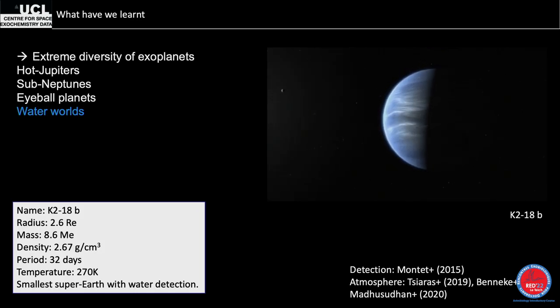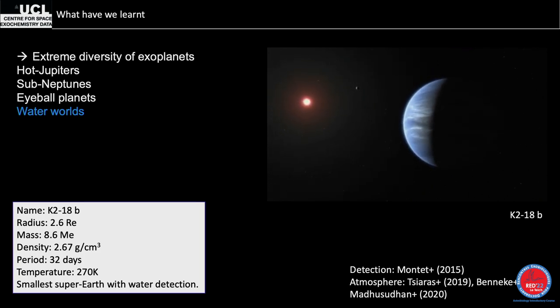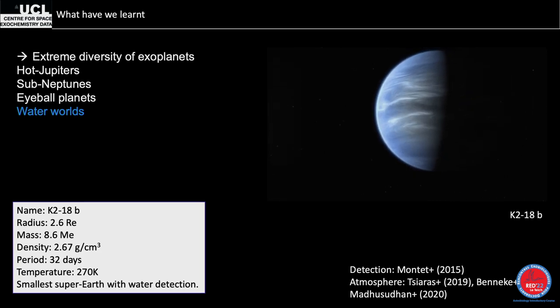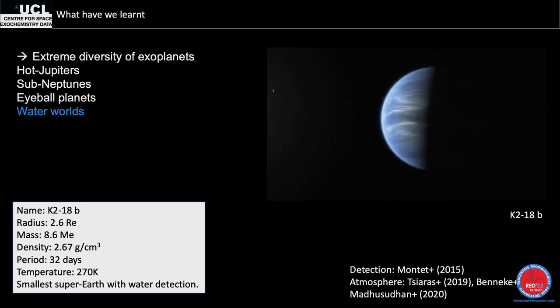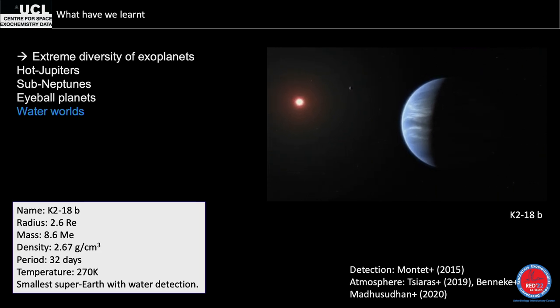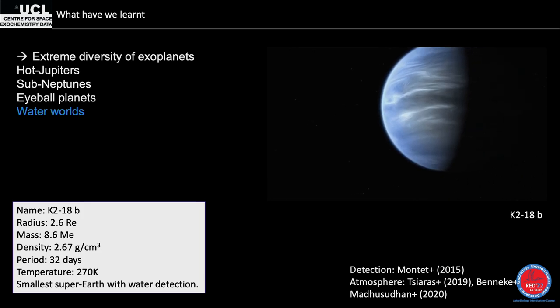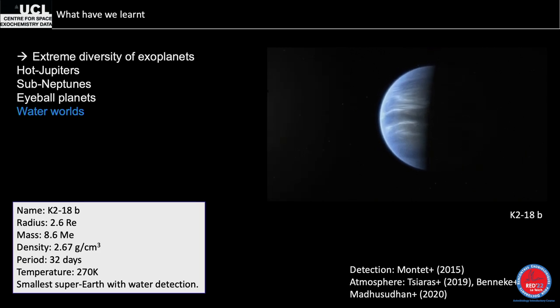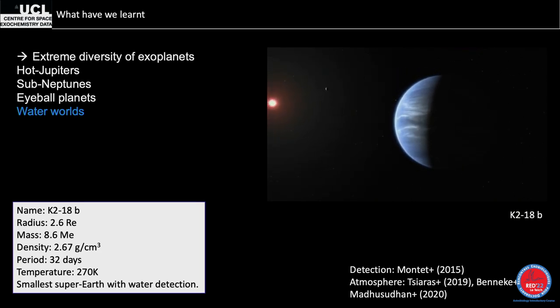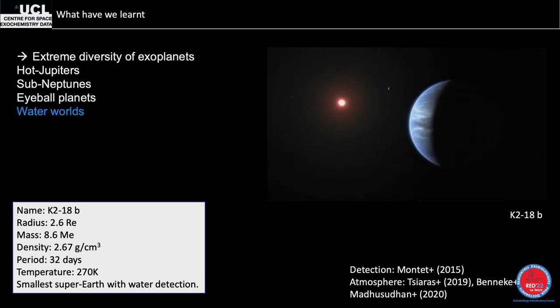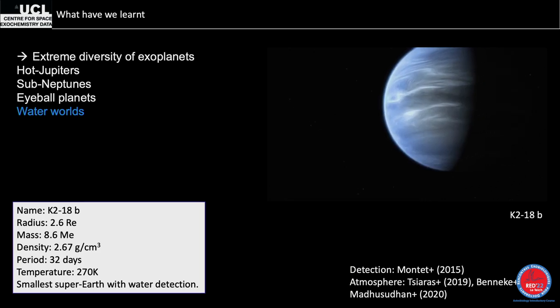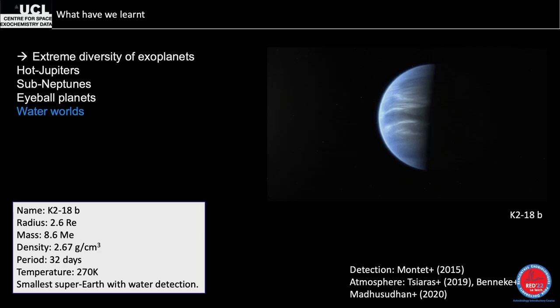K2-18b — classified as a sub-Neptune or water world, though the boundaries are unclear. It made news because its equilibrium temperature is about 270 K, making it the most temperate and smallest planet for which water detection has been achieved. We don't know if it's a water world or a hydrogen-dominated planet with trace water. It will be observed extensively by James Webb.